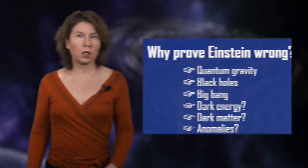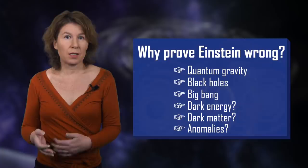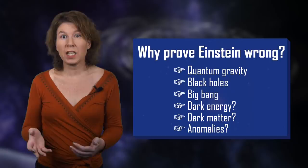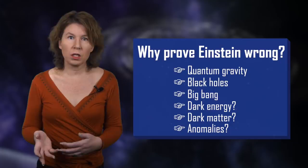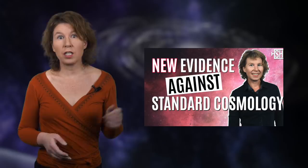What would it be good for to prove Einstein wrong? Well, first of all, it would give us experimental guidance to develop a theory of quantum gravity, and that could help us understand the quantum properties of space and time as well as what's inside black holes or what happened at the big bang. Many physicists also hope that it will shed light on other puzzles, such as dark matter and dark energy, or explain some nagging anomalous observations in cosmology, like the presence of too many large structures in the universe, which we talked about in an earlier video, or that different measurements of the Hubble rate don't give the same results.